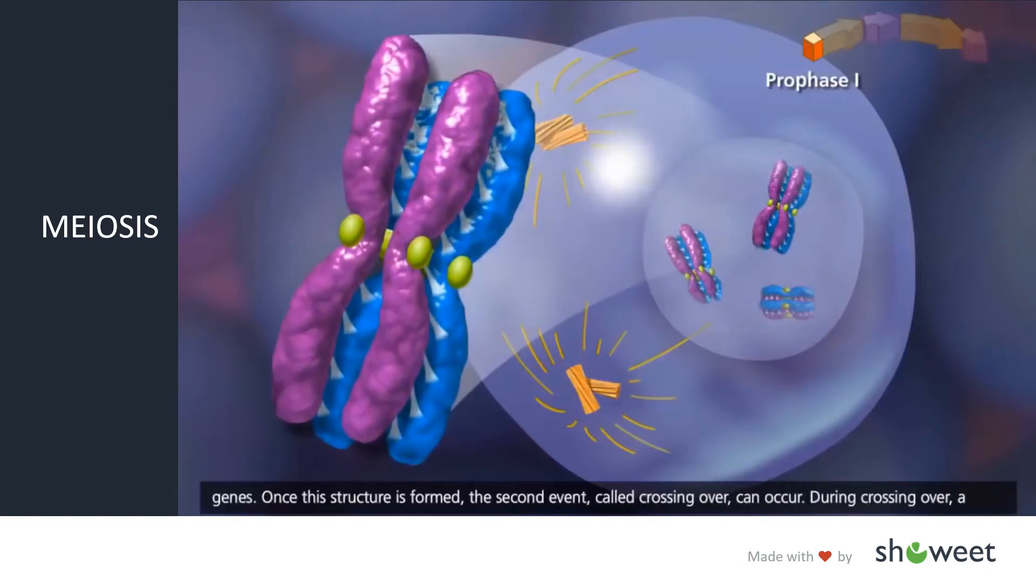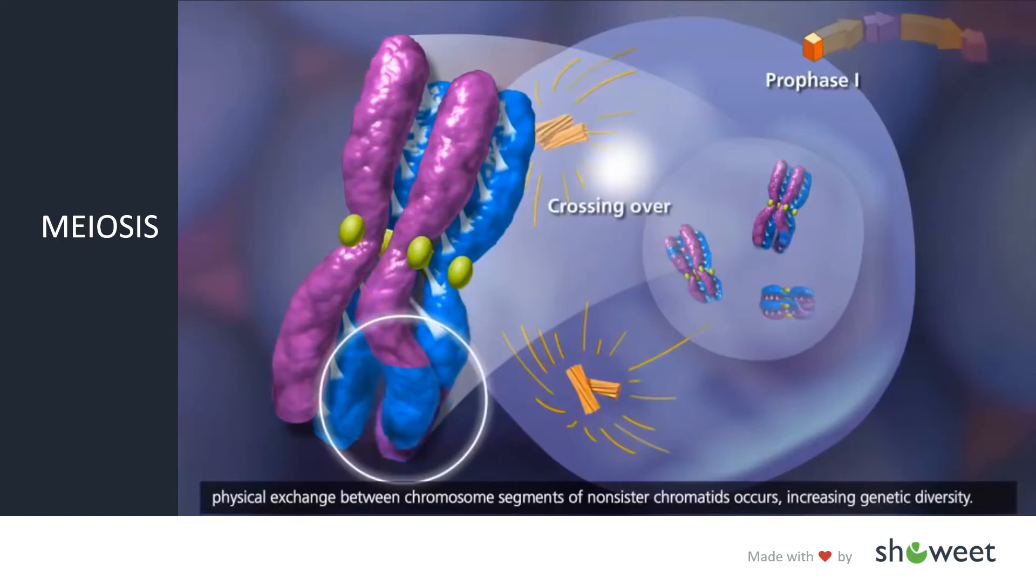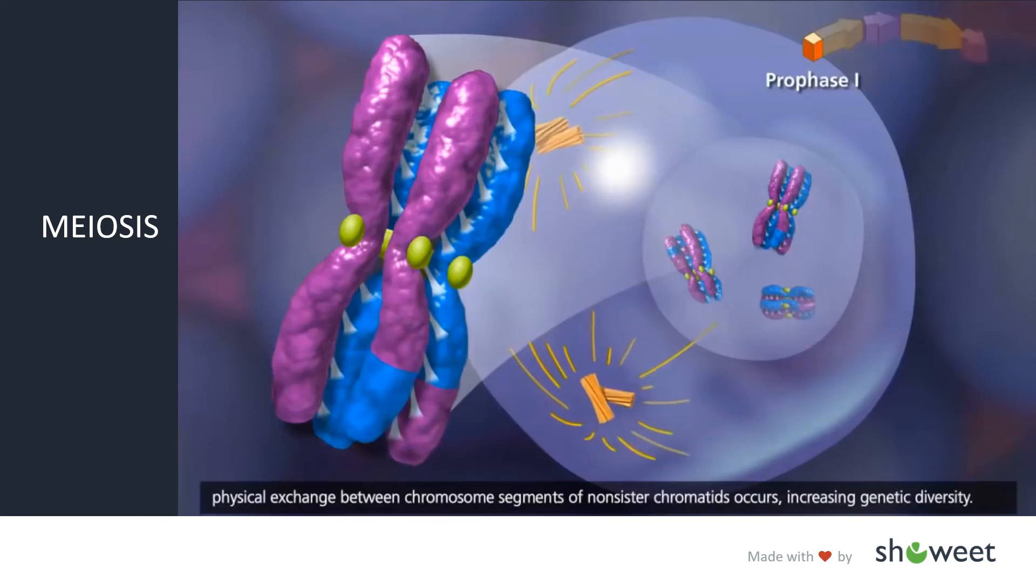Once this structure is formed, the second event, called crossing over, can occur. During crossing over, a physical exchange between chromosome segments of non-sister chromatids occurs, increasing genetic diversity.